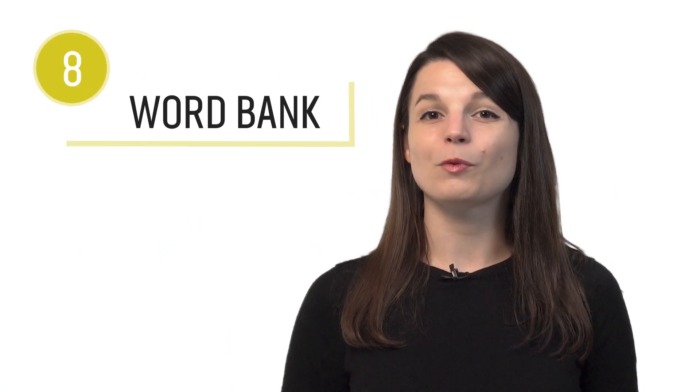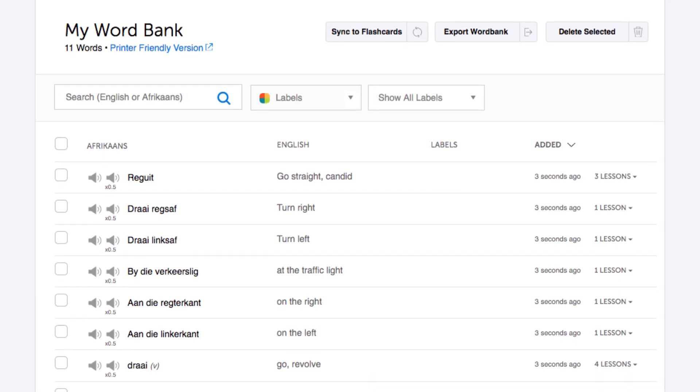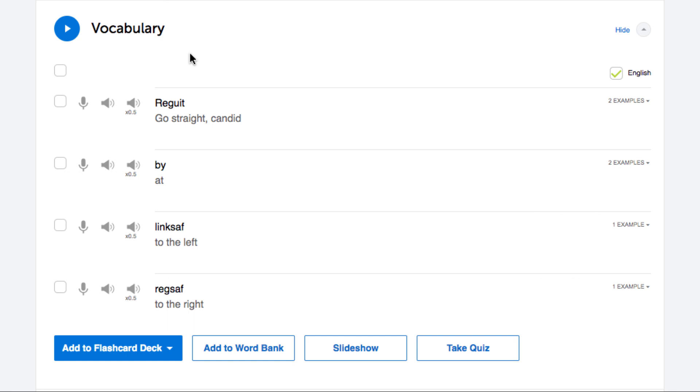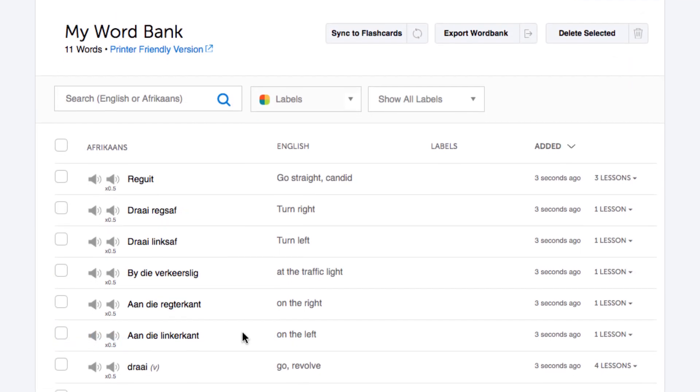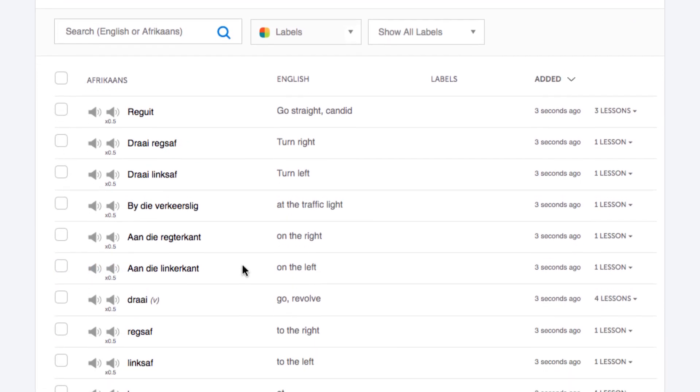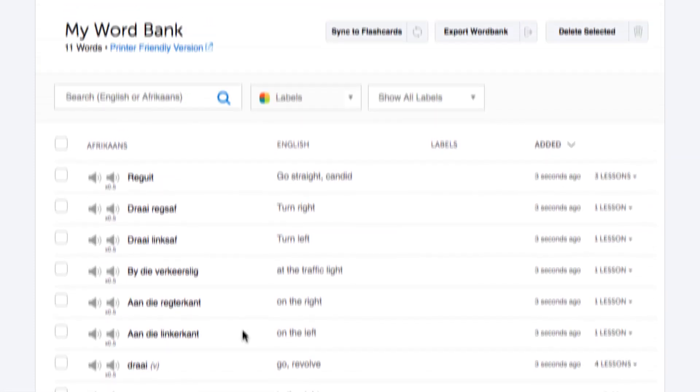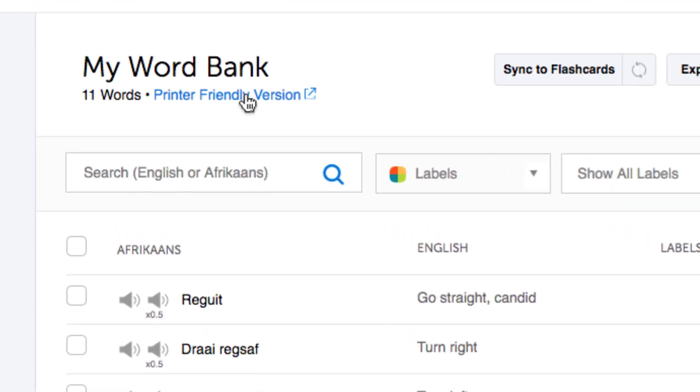Number eight, word bank. The word bank is your personal database of words and phrases. If you come across a word you like and want to review later, save it to your word bank. You can save words and phrases from lessons, free vocab lists, and the Core 2000 word list. With the word bank, you can even create and print out word lists to use as physical study material.